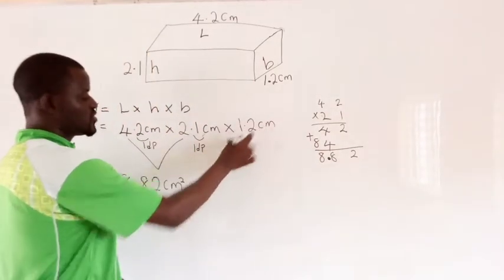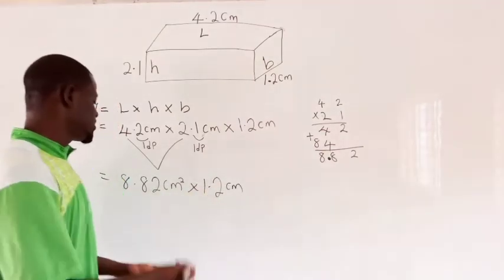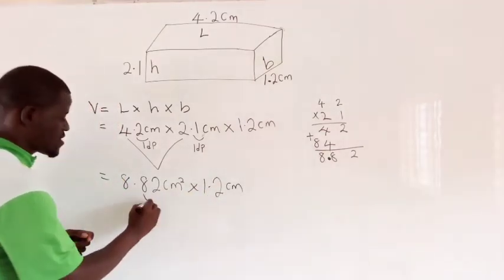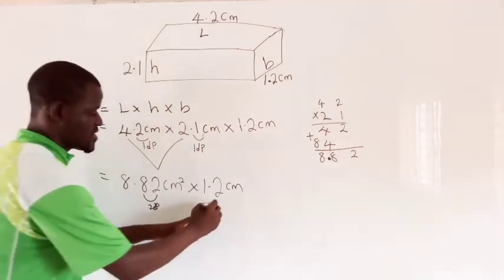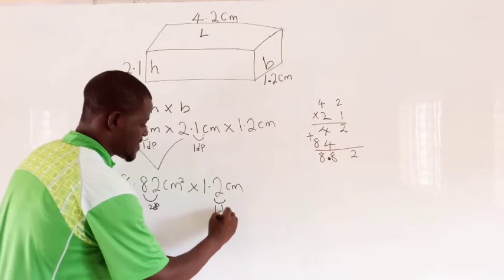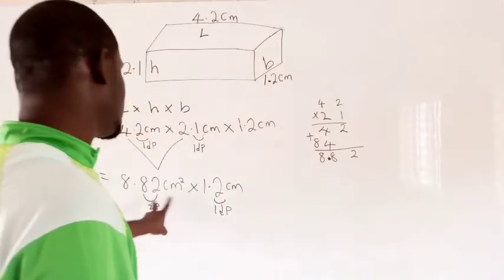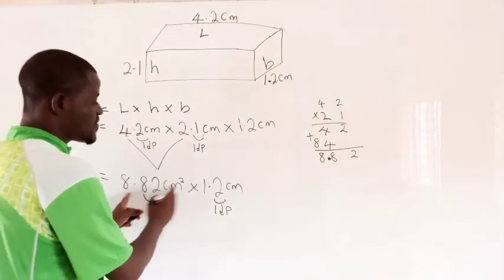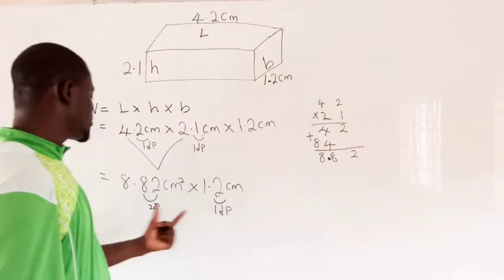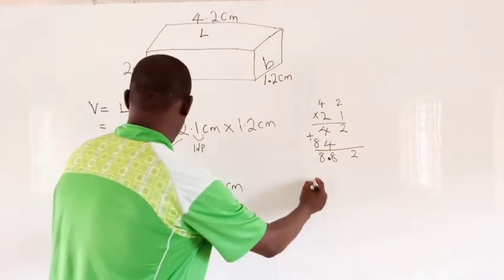Now we are not done with this. We have 1.2 cm. So the same thing: we have 2 decimal places here and 1 decimal place here, so altogether we are going to have 3 decimal places at the end of this solving. So we multiply these numbers directly ignoring the decimal points.